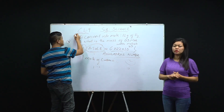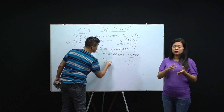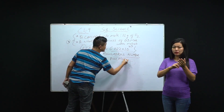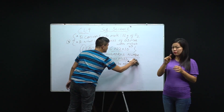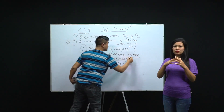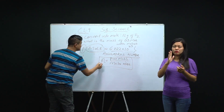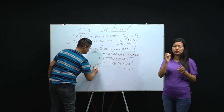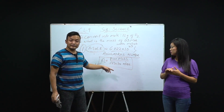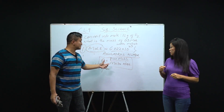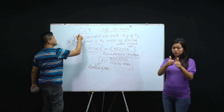The formula is: n = given mass / molar mass. Here, n means number of moles. This is the given mass and this is the molar mass. We discussed yesterday how to calculate molar mass. By using this formula we can solve the two questions I have written here.